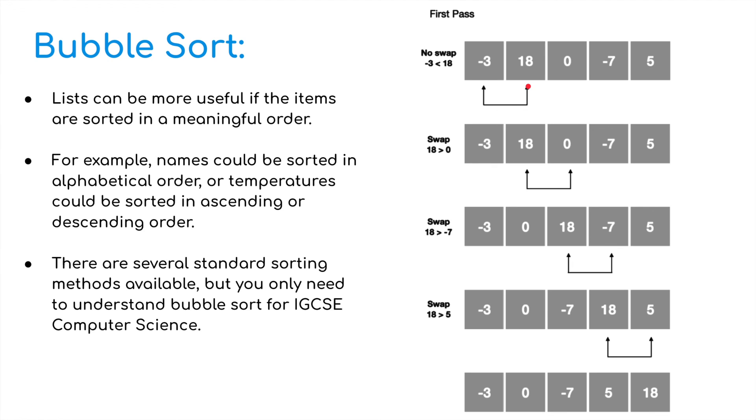So no swap. And then we've got the next two numbers, 18 and 0. Of course, they need to be swapped. So now we've got minus 3, 0, 18. We compare 18 and minus 7. Of course, they need to be swapped. And then we compare the last two, 5 and 18. And again, they need to be swapped. But we're still not in ascending order. We've got minus 3, 0 and minus 7. Minus 7 being the lowest.